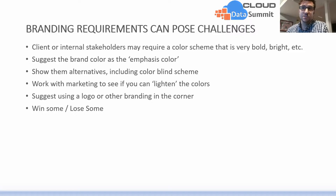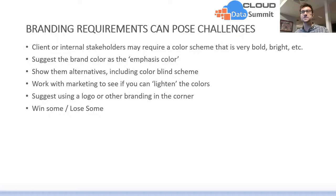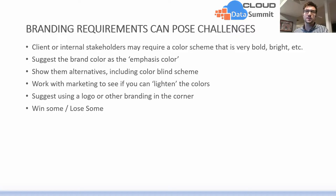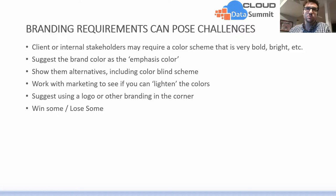To handle branding challenges: first, suggest the brand color as the emphasis color — so red is only used when calling out a specific insight, like highlighting Mary. Then use a secondary color (such as a light blue) as the neutral base color. You can also show the colorblind scheme alternative, explaining that 4.5% of the population is colorblind — that's a compelling reason to recommend it. Work with marketing to see if colors can be lightened. And often, simply putting their logo in the top corner will satisfy a lot of branding asks while you use gray and blue elsewhere. Know when to push back and when to simply move forward with the branding, because best practices don't always win every audience.